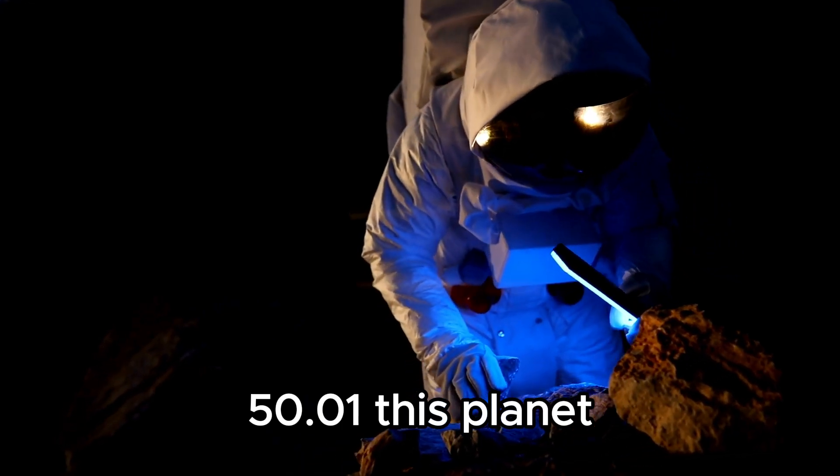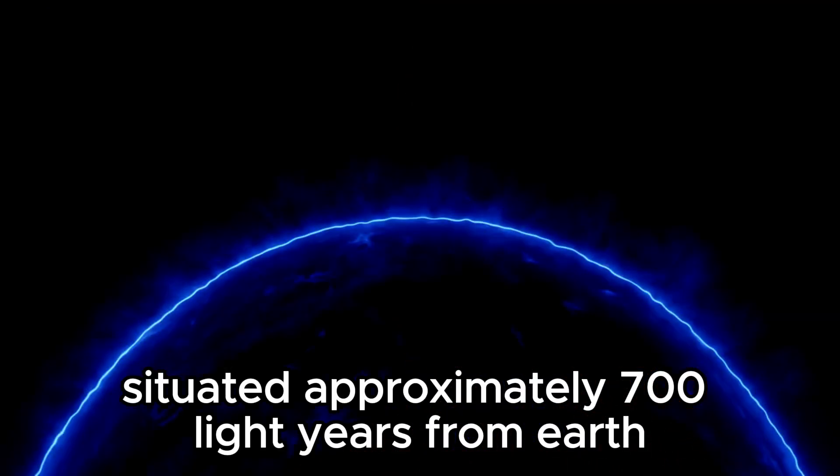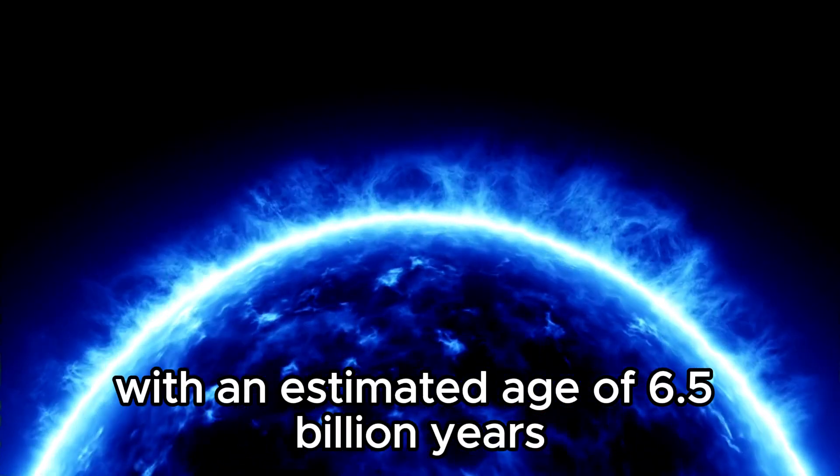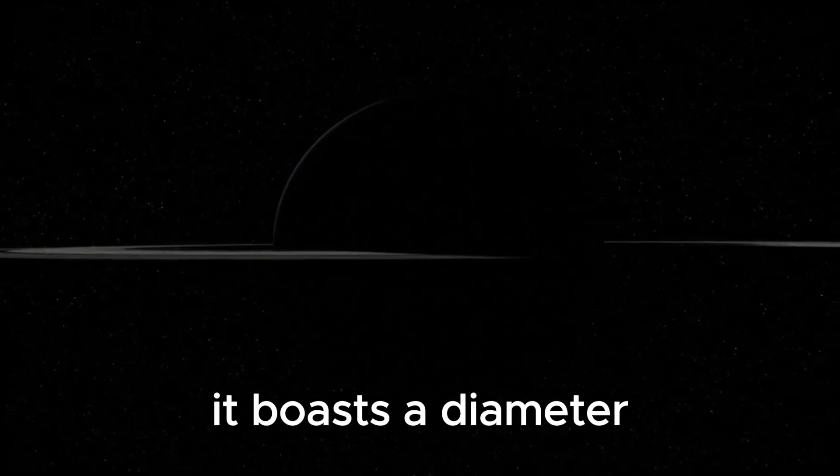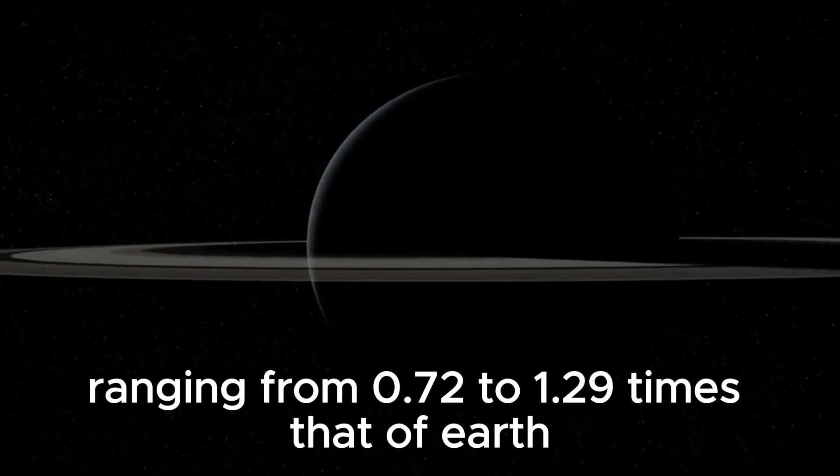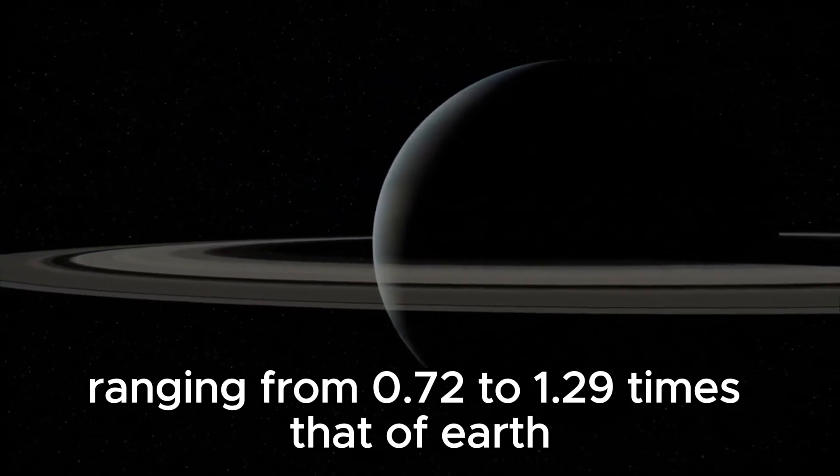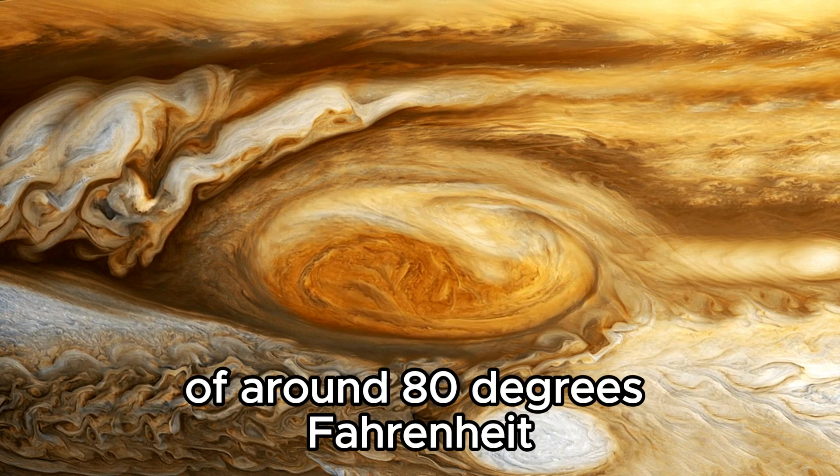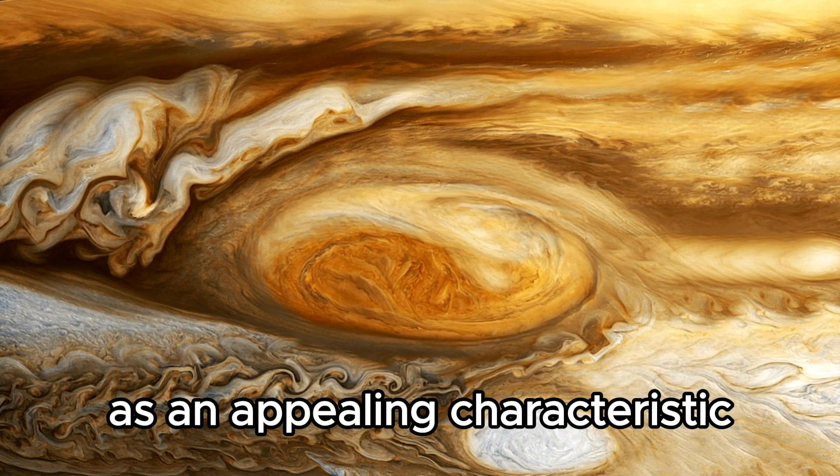This planet, situated approximately 700 light-years from Earth, orbits a yellow dwarf with an estimated age of 6.5 billion years. It boasts a diameter ranging from 0.72 to 1.29 times that of Earth. The researchers highlighted its average surface temperature of around 80 degrees Fahrenheit as an appealing characteristic.